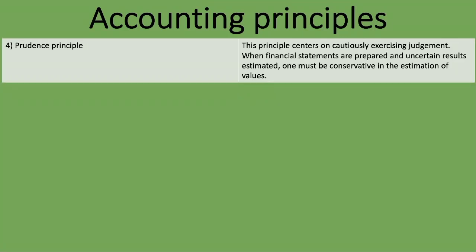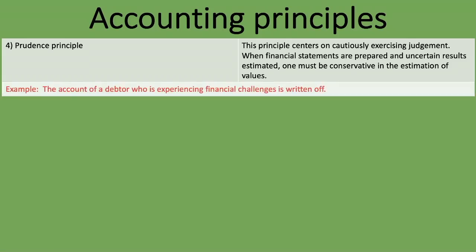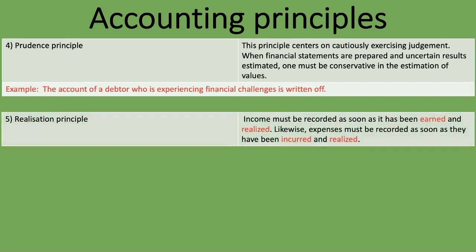The fourth principle is the prudence principle. This principle centers on cautiously exercising judgment when financial statements are prepared and uncertain results are estimated — one must be conservative in the estimation of values. An example: the account of a debtor who is experiencing financial challenges is written off. We exercise judgment to say this debtor is probably not going to pay us, so we write it off and consider it a bad debt or credit loss.